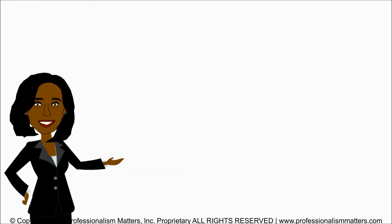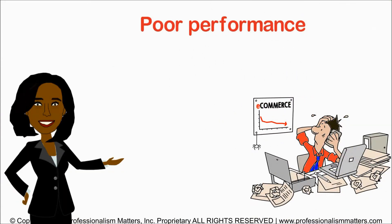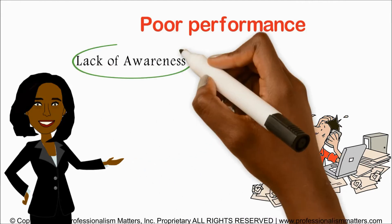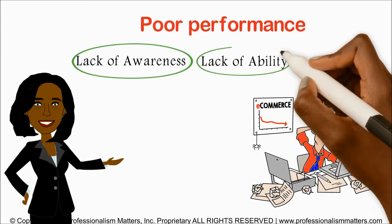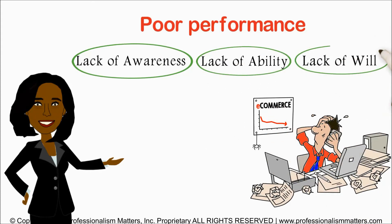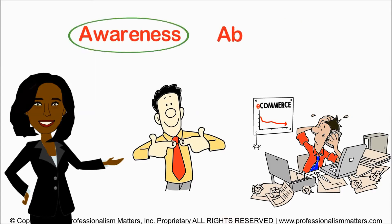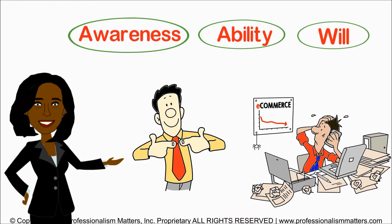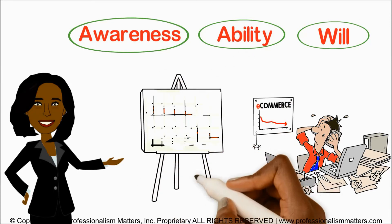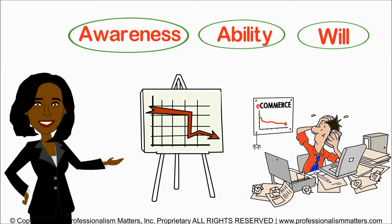In my experience, poor performance is a function of one or more of three elements: lack of awareness, lack of ability, or lack of will. An employee must have all three — awareness, ability, and will — in order to perform a particular skill well. If any of the three are missing, performance will suffer. And each cause requires a very different corrective action approach. Let's examine each one.